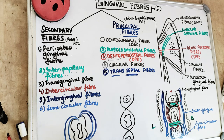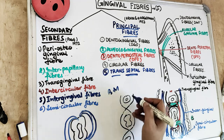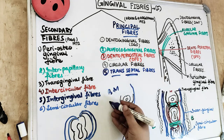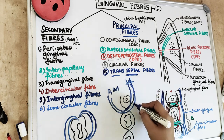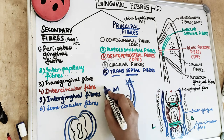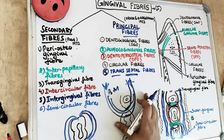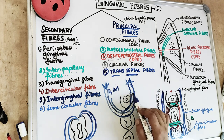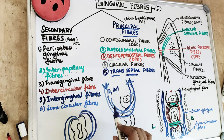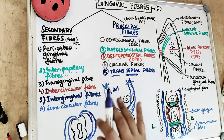The inter-gingival fibers are present below the basement membrane in the connective tissue of the attached gingiva. If you recall from the basement membrane section, Type 7 collagen fibers are anchor fibers going from the basement membrane into the connective tissue and back into the epithelium — those are the inter-gingival fibers. Semi-circular fibers encircle the tooth in half a circle for each tooth.